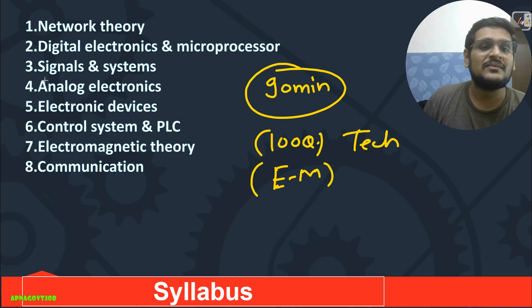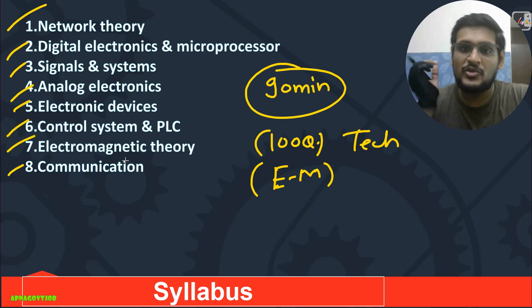The subjects are: Network theory, Digital electronics and microprocessor, Signals and systems, Analog electronics, Electronic devices, Control system and PLC, Electromagnetic theory, and Communication. These are the eight major subjects you need to study.